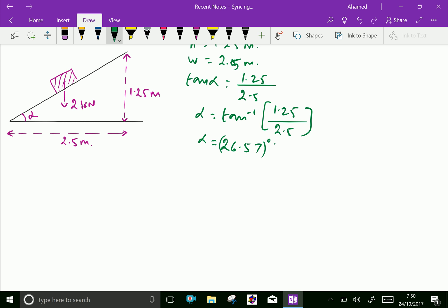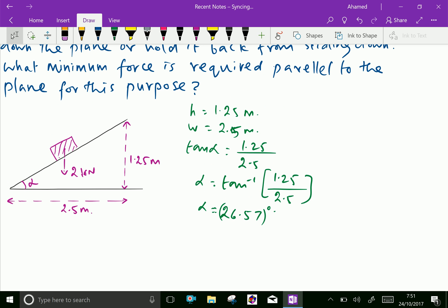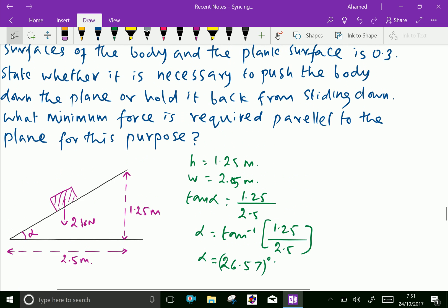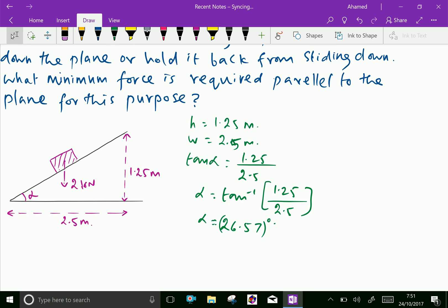Now we have, now we will put the values. This is a normal reaction, here this is R. Suppose the body is pulled by the force of P, then force of friction acting opposite direction, that is downward, that is F.